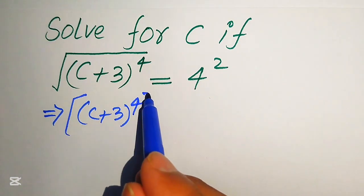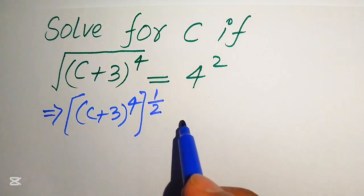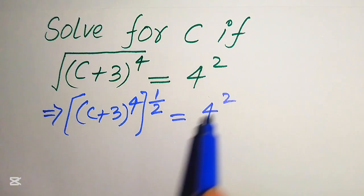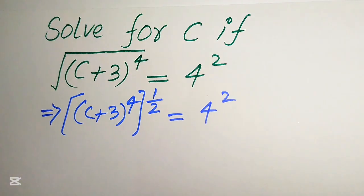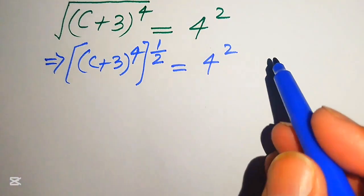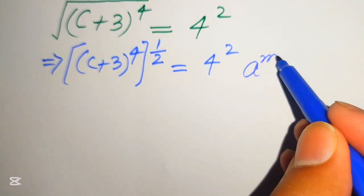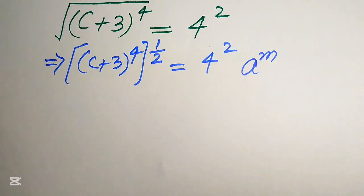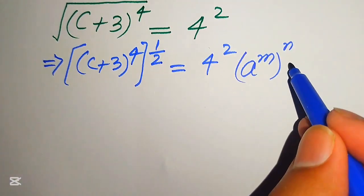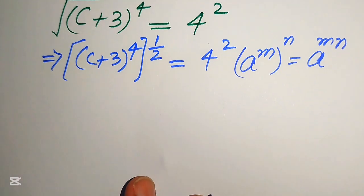We know that the radical is equal to the exponent 1 over 2, so we convert this into exponential form. On the right hand side we have 4 squared. Further, we need to apply the exponent law: a to the power of m, to the power of n, equals a to the power of m multiplied by n.